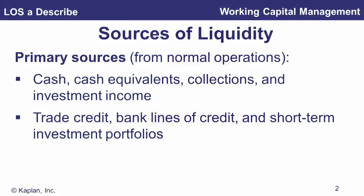We start by looking at primary and secondary sources of liquidity. Primary sources are the cash generated from day-to-day normal operations: cash on hand, cash equivalents, collections from accounts receivable, investment income, and dividend income. We can also borrow — from suppliers via trade credit, from bank lines of credit, or through short-term investment portfolios.